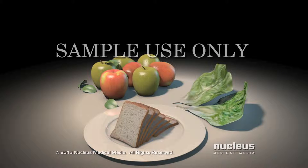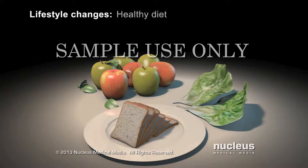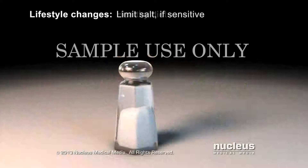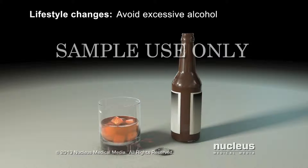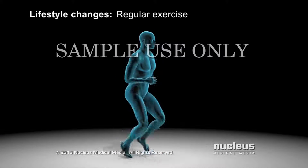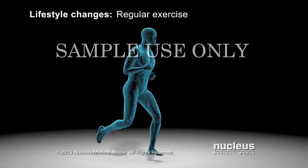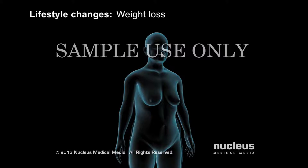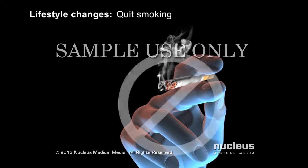Treatment for essential hypertension includes lifestyle changes such as eating a healthy diet. If you are sensitive to the sodium in salt, your doctor may recommend limiting your intake of salt and highly processed foods. Sodium may cause your body to retain water, which increases both your blood volume and your blood pressure. Other lifestyle changes that can reduce blood pressure include avoiding excessive alcohol intake, getting regular exercise, losing weight if you are overweight, and quitting smoking.